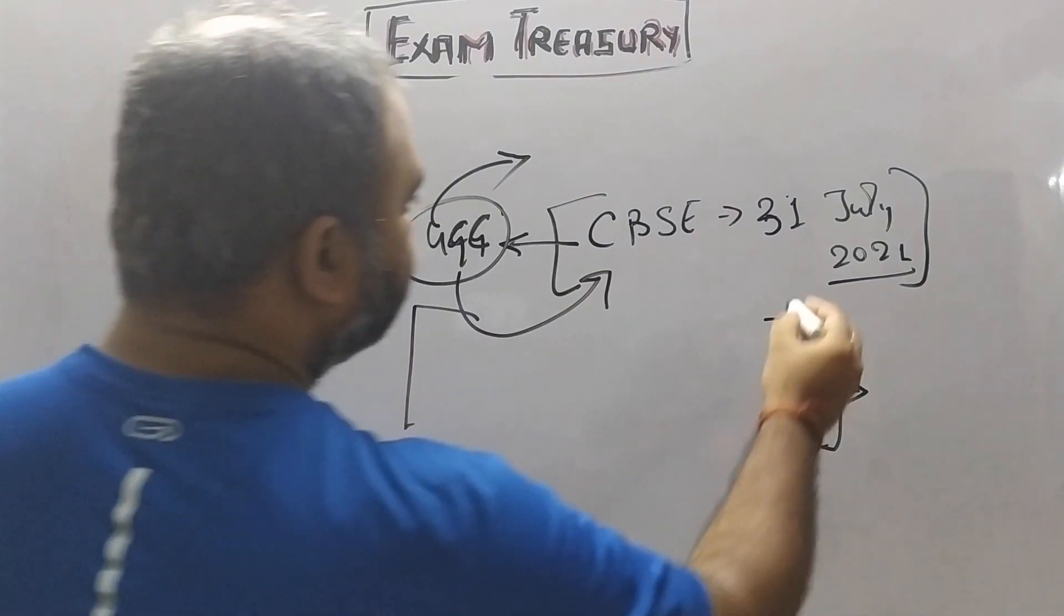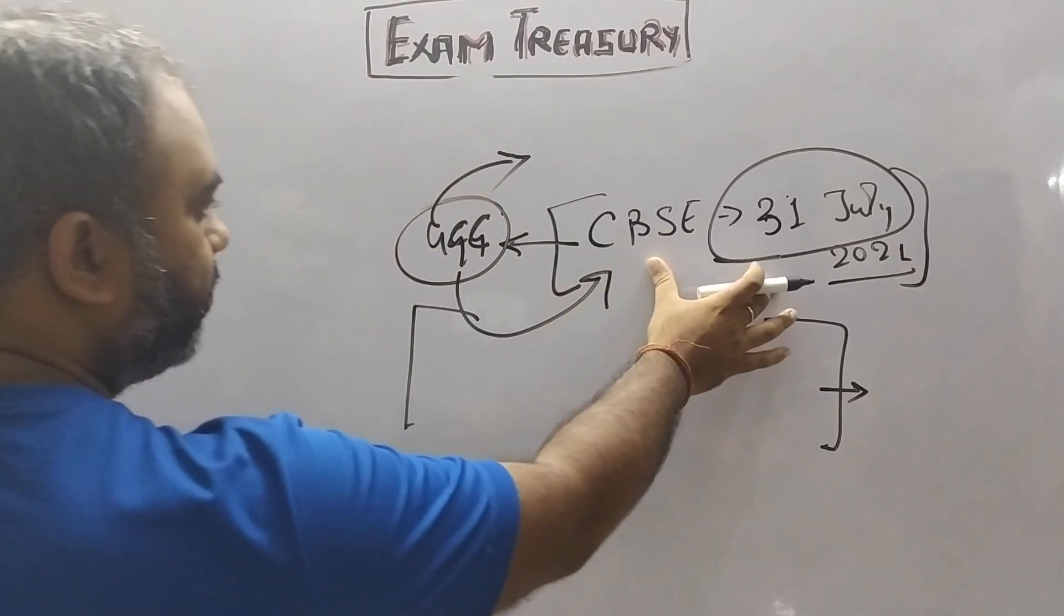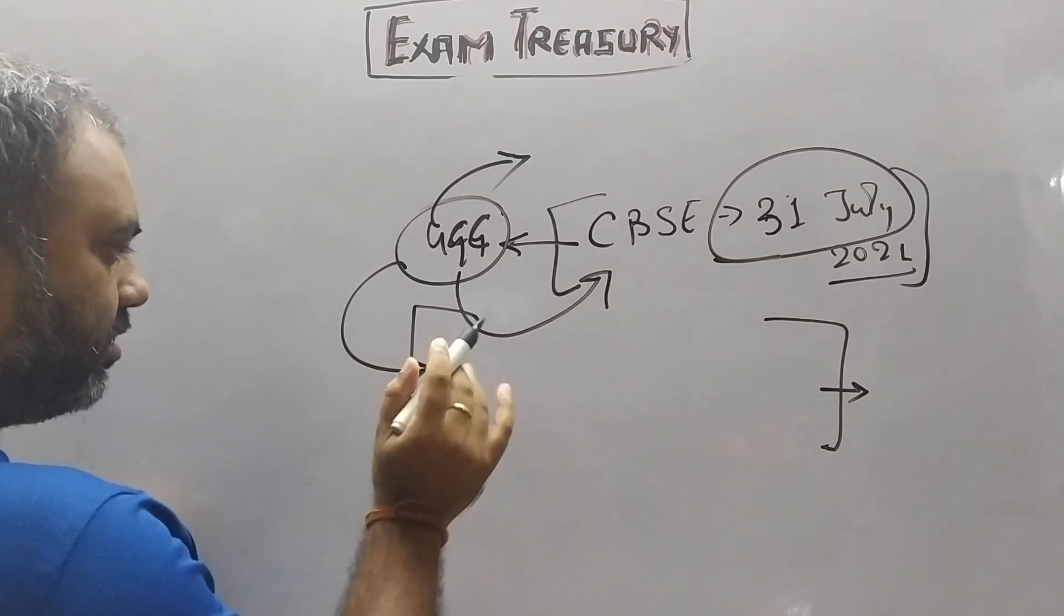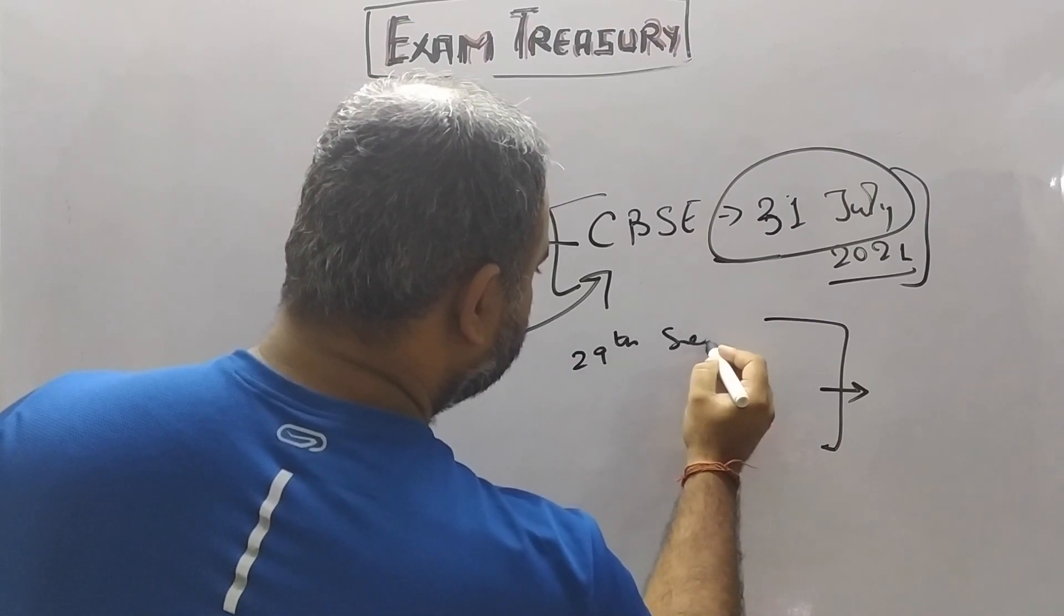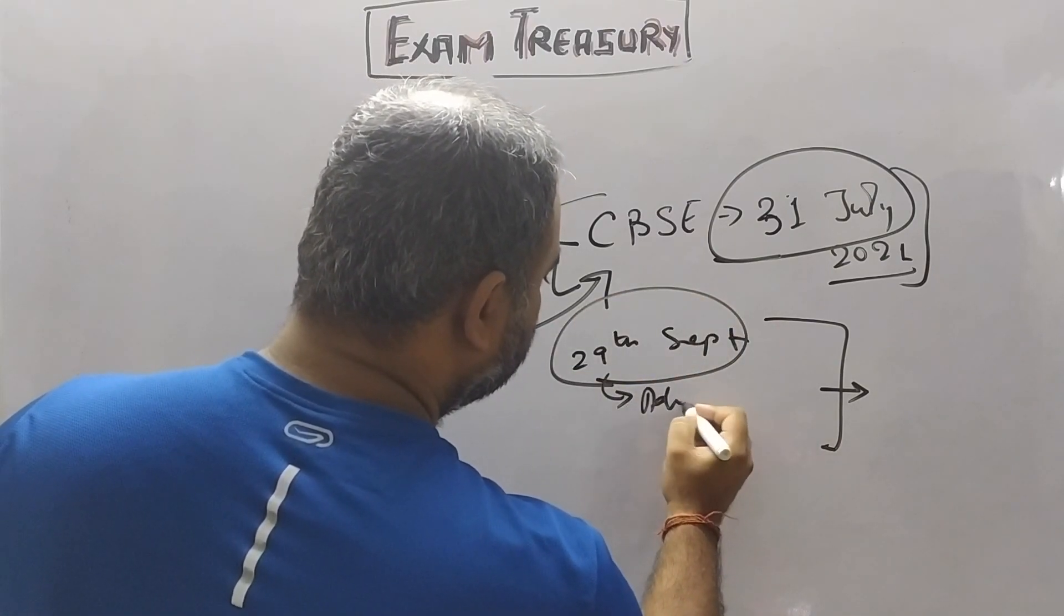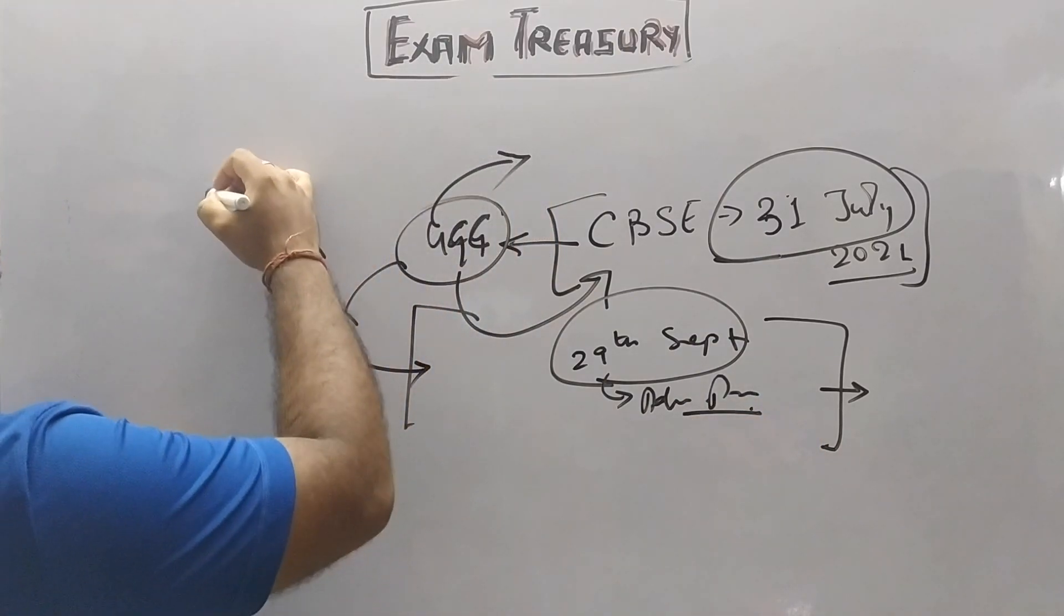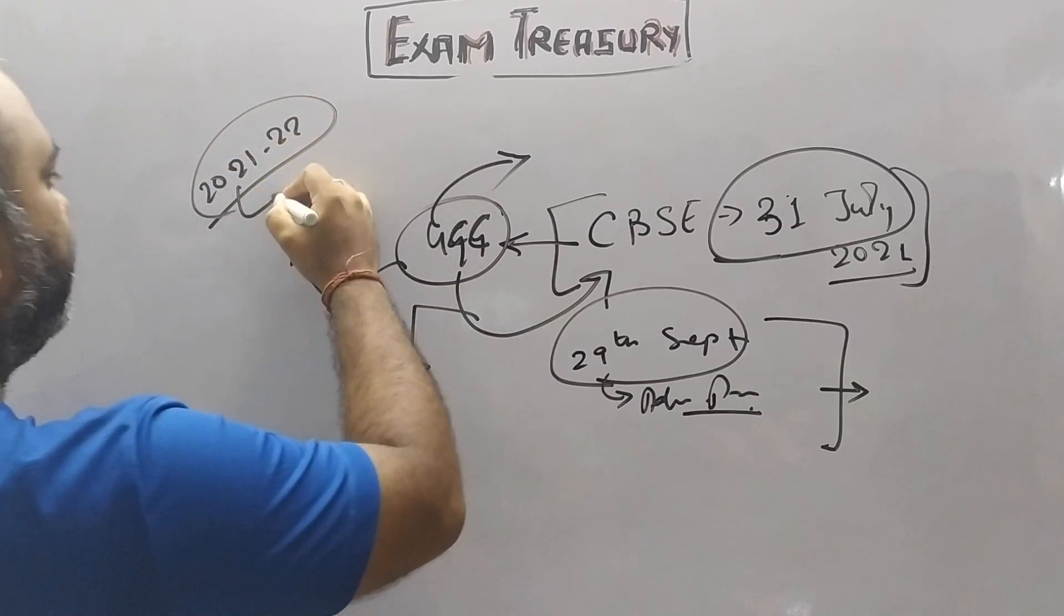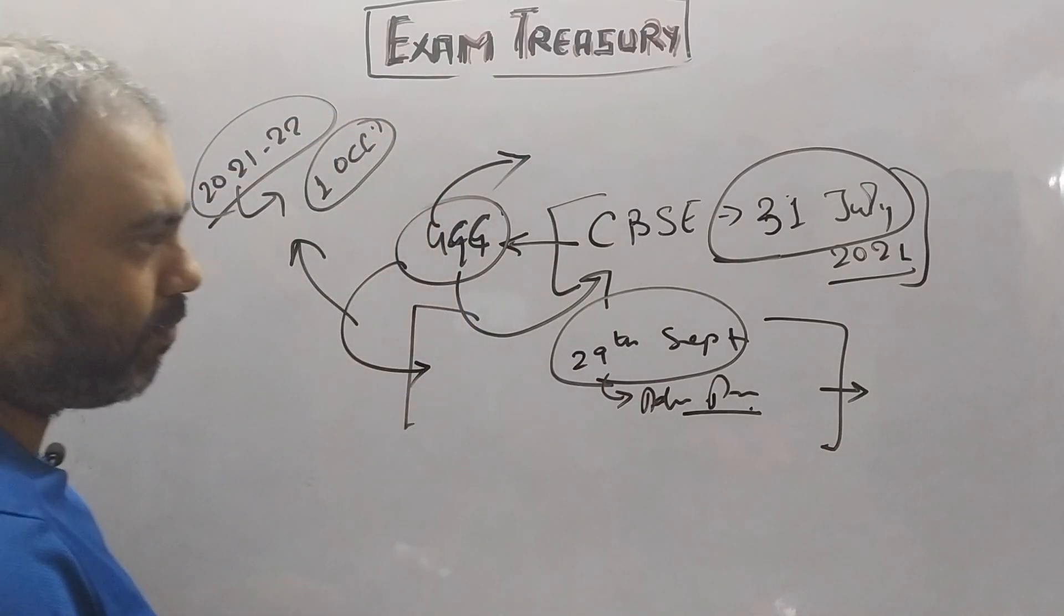The final date for CBSE is 31 July where they have to declare their results. UGC has released guidelines for colleges and universities, stating that by September 29th, all admission processes should be completed. And the academic session of 2021-22 will start from October 1st.